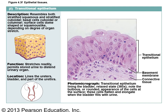Transitional epithelium is another multiple-layer type. The cells are rounded, almost dome-shaped, and it's found primarily in the urinary tract — the ureters and bladder. This epithelium can stretch: when the bladder is filling, the cells look more elongated, and when the bladder is collapsed they look more dome-shaped. So transitional epithelium is associated with the urinary system.